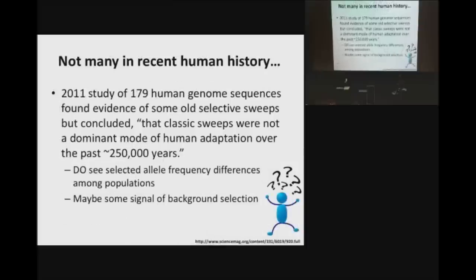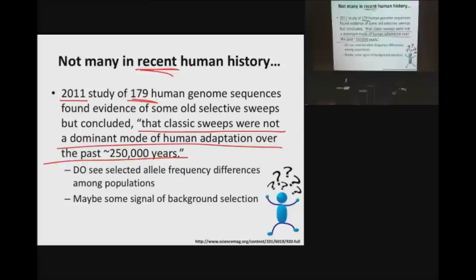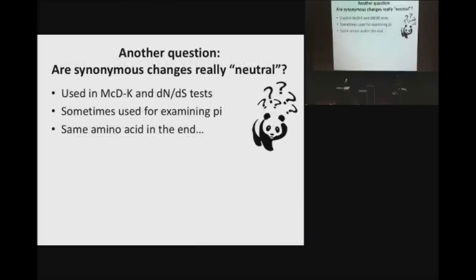Surprisingly, there haven't been many examples of selective sweeps in recent human history. A 2011 study looking at 179 human genome sequences found that, by and large, classic sweeps were not a dominant mode of human adaptation over the past 250,000 years. You do see allele frequency differences among populations — comparing Europeans with Africans or Asians — but you don't see sweeps across the entire human species almost at all. There is also some signal of background selection.